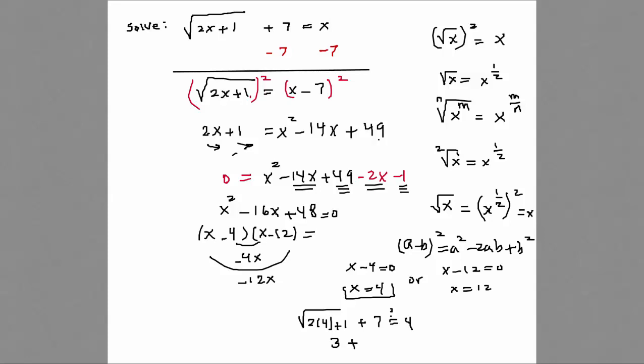How about 12? Let's test 12. 2 times 12 plus 1 plus 7, is that equal to 12? That would be 24 plus 1 would be 25. Square root of 25 is equal to 5. 5 plus 7, is that equal to 12? Yes, it is. So 12 would be the answer we can select. X is equal to 12, not x equal to 4.